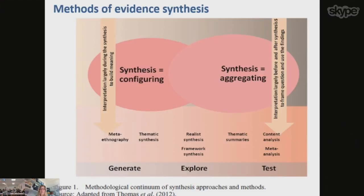These interpretations tend to happen before and after the synthesis, not in it — they're ways of framing the question or using the results. Over on the left are the more configuring or interpretative reviews, with metaethnography as an example, where interpretation happens during the synthesis to build meaning and generate theories using empirical data. Realist review, which is where I'm speaking today, along with framework synthesis, involves exploring theories. So that's one way of thinking about the different approaches and their relationship to interpretation and theory.